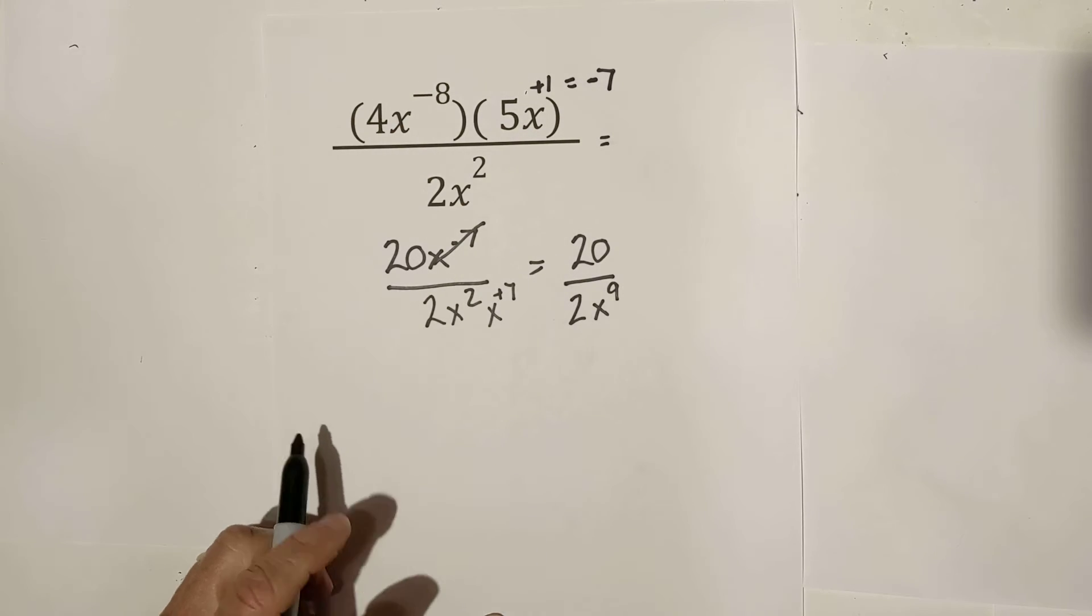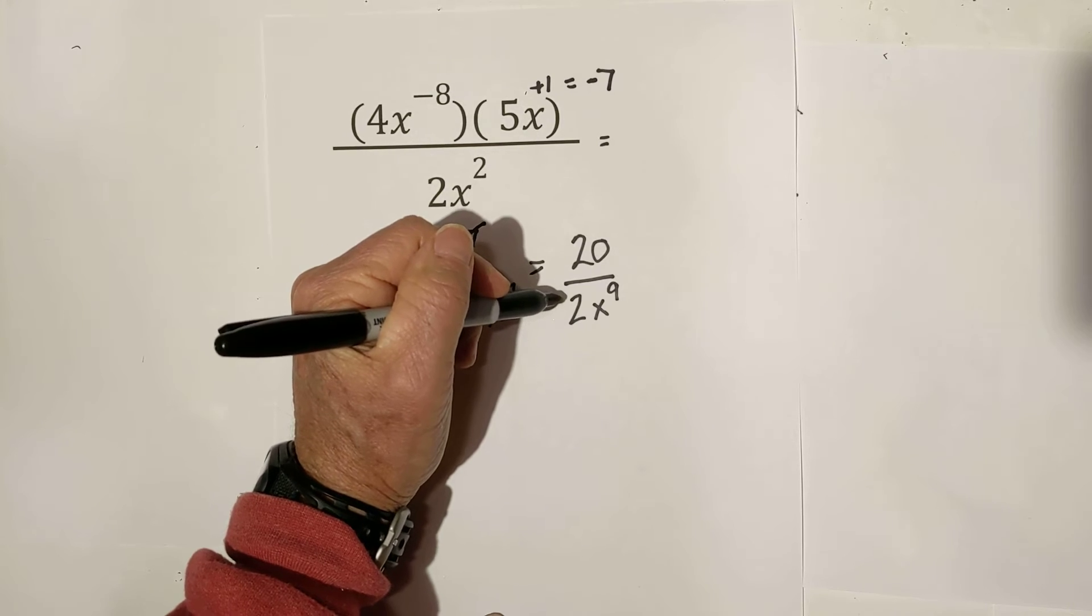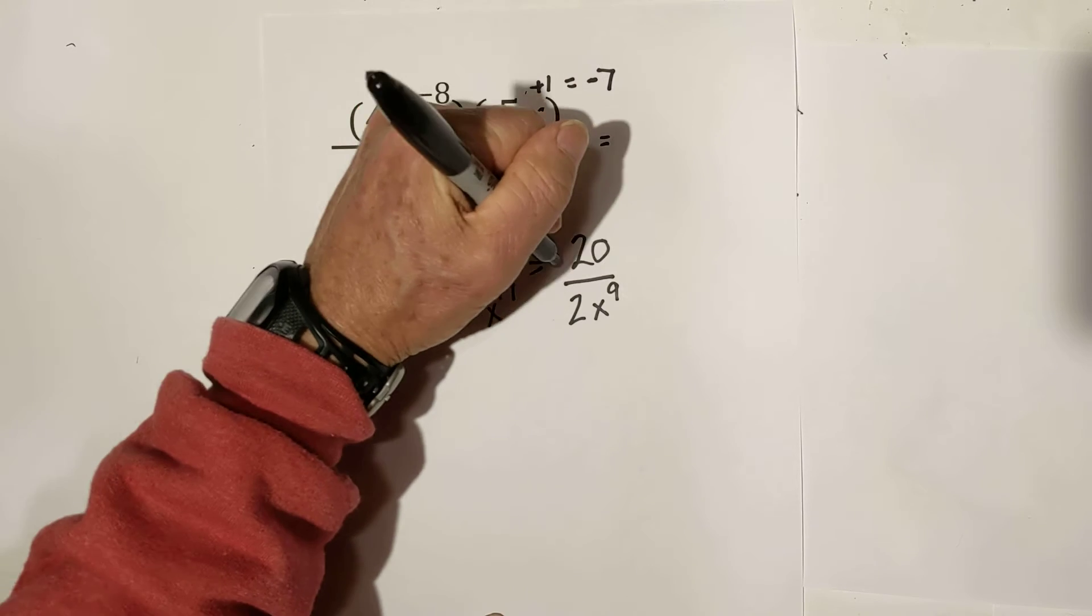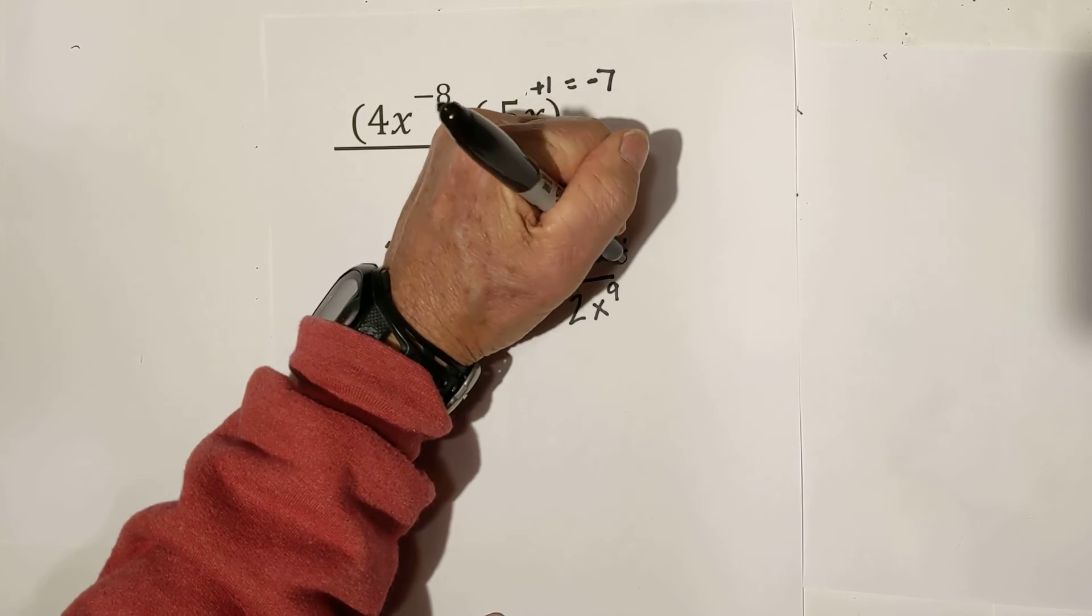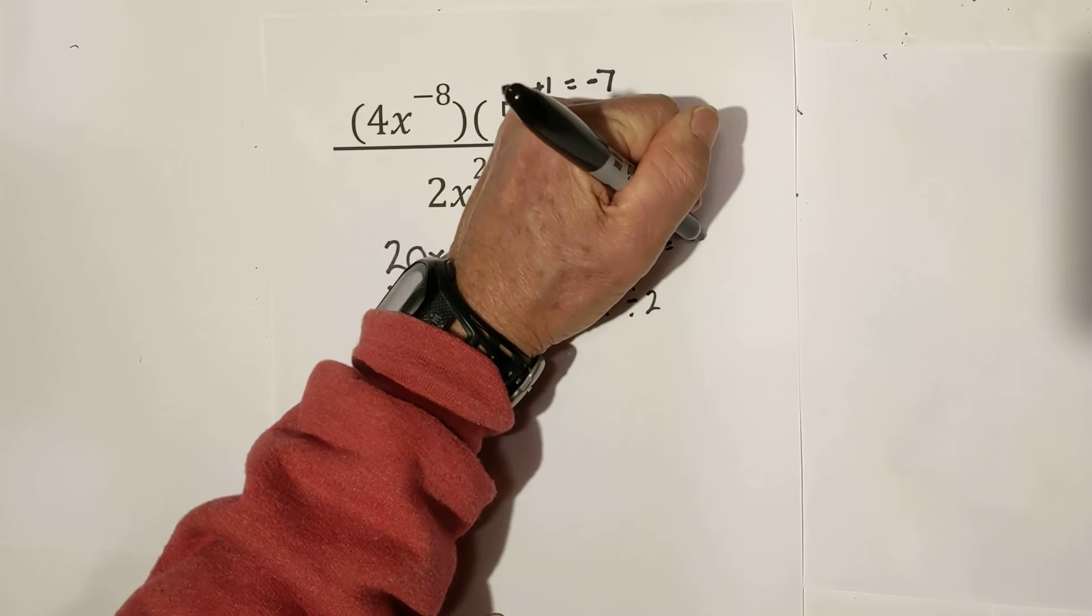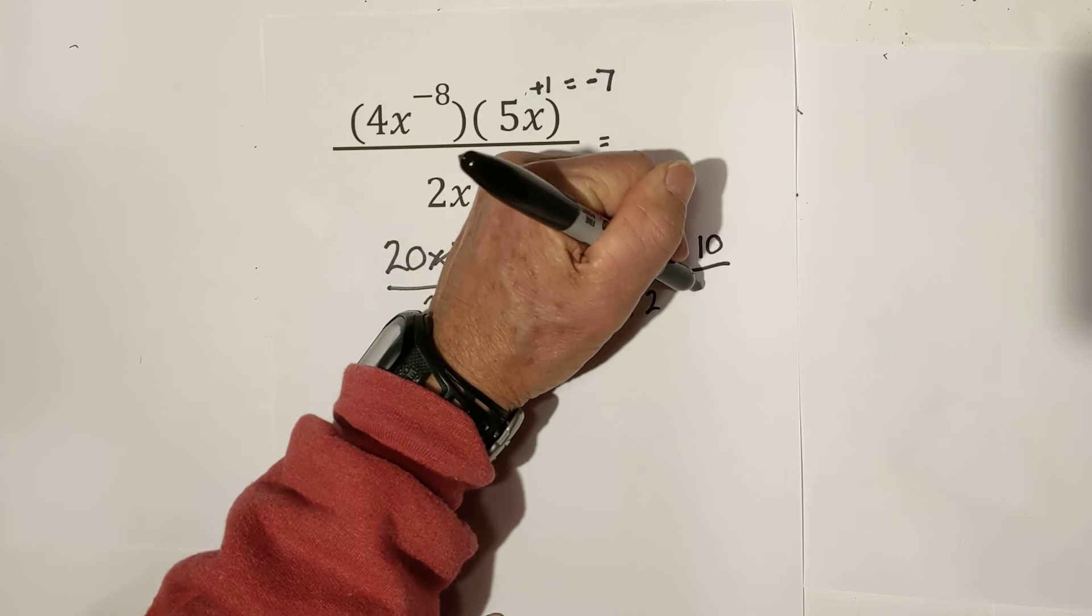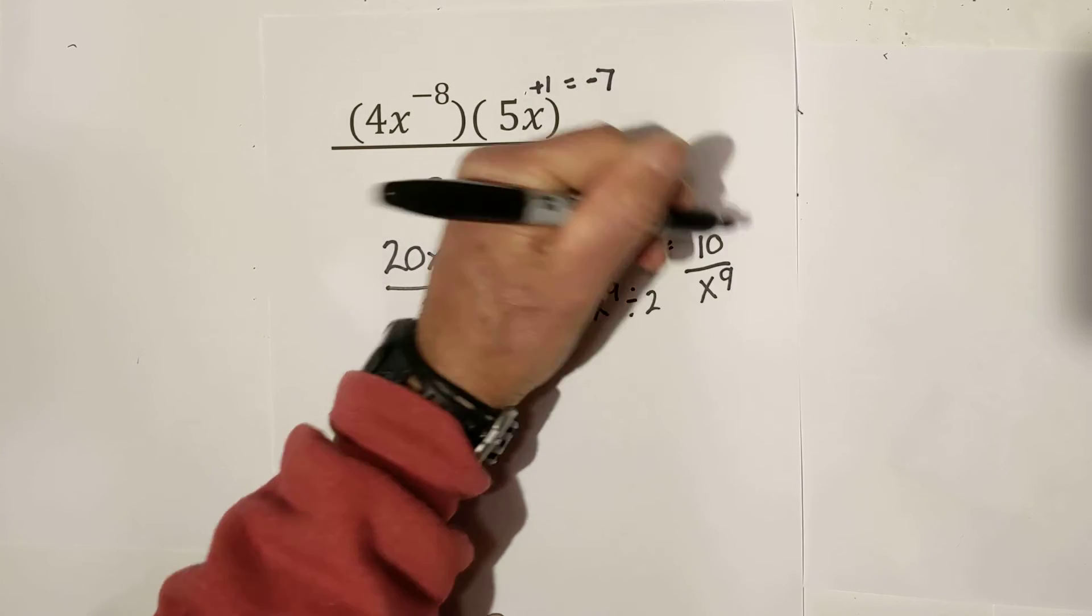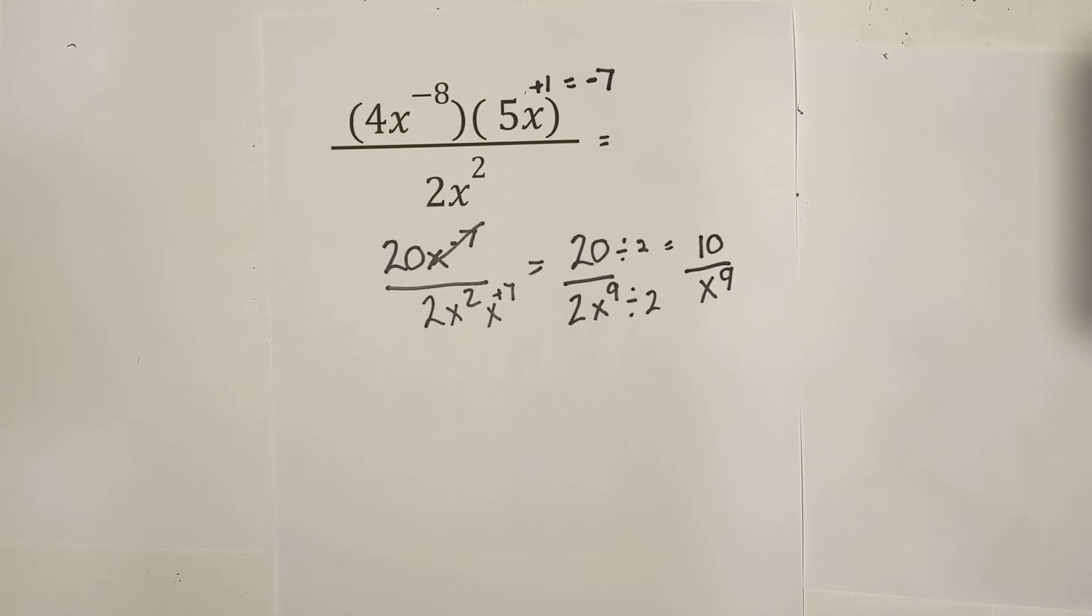Now, we can further simplify it by dividing by 2. So, we'll divide this by 2, this by 2, and that equals 10 over x to the 9th. Let's work one more final one.